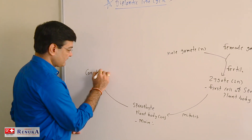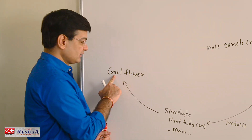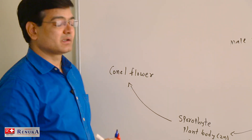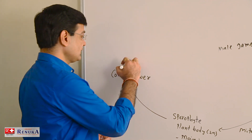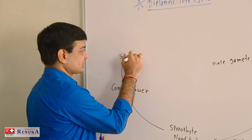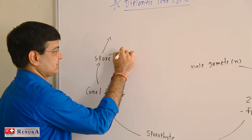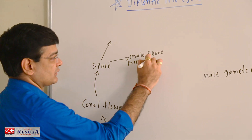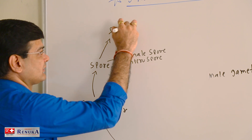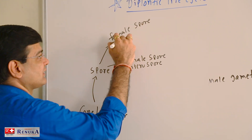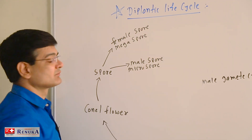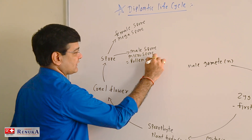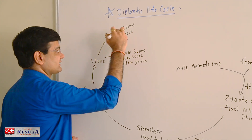This sporophytic plant body later produces a cone or a flower. The word 'cone' is used in the case of gymnosperms, and 'flower' is used in the case of angiosperms. The cone or flower produces spores of two kinds: male spores or microspores, and female spores or megaspores.